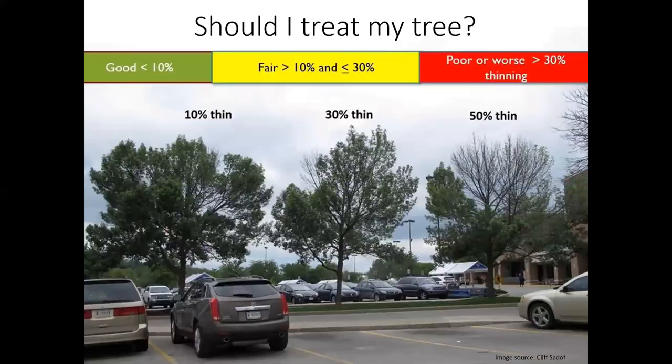One of the questions that I do regularly get is: should I treat my ash tree? And this one is a tough one to answer. 99% of the time when someone asks me that, usually it's when the tree is at its worst. I want to stress to you right now that the best thing that you can do is act on this early. This image shows a really good example of when you want to take action. You see the bar at top there — less than 10% foliage loss is good. Between 10% and 30% foliage loss is fair. And then the worst is when there's more than 30% foliage loss from the tree. If you're at 10% foliage loss, most likely you aren't even aware that there could be any kind of potential problem.